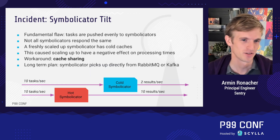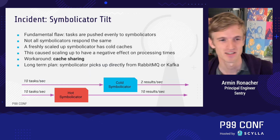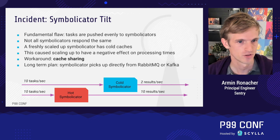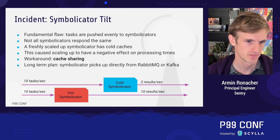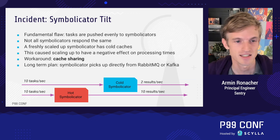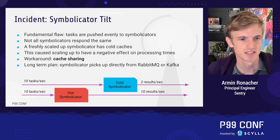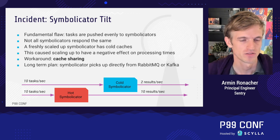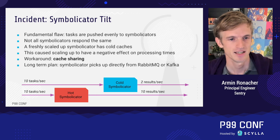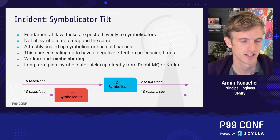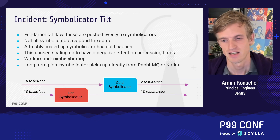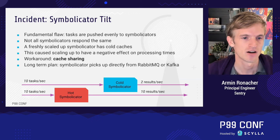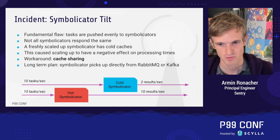There are many good solutions for this — ideally we'd be more directly involved in the RabbitMQ setup, but that's a bigger change. What we did instead is active cache sharing: when a new symbolicator comes up it gets the cache from other symbolicators via a shared GCP bucket, so the cold symbolicator warms up much, much quicker, and that scaling problem is no longer much of a problem.